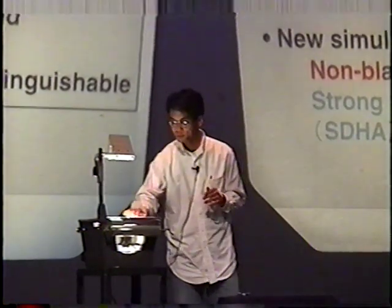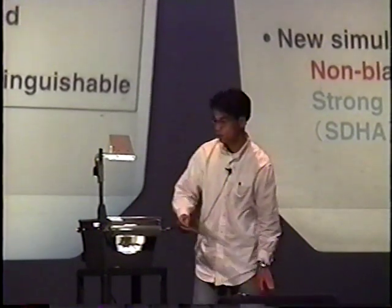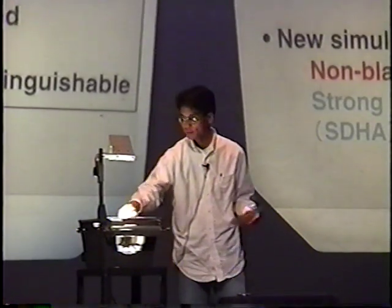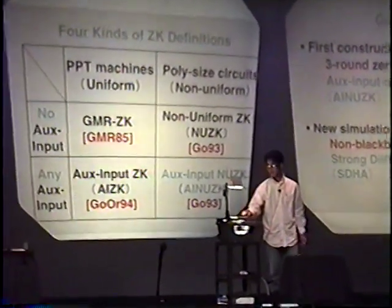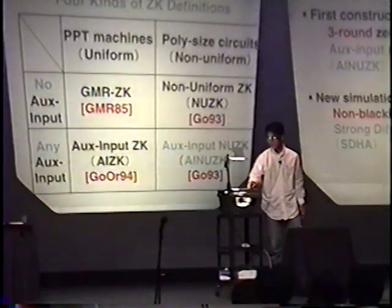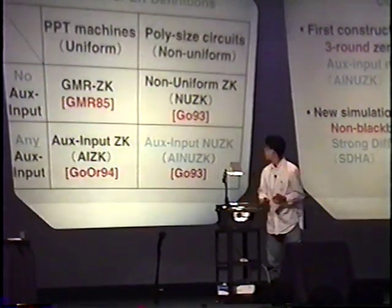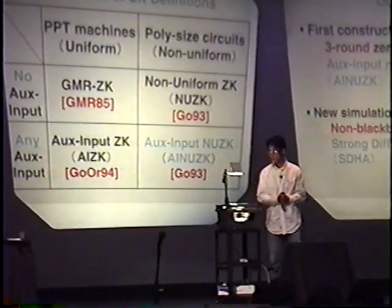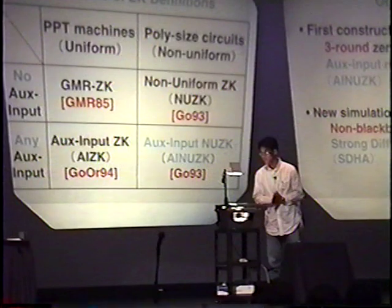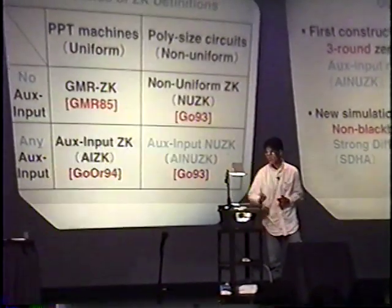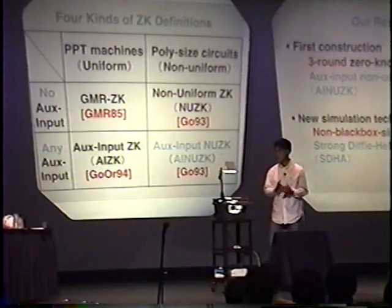And we consider two dimensions in this formalization. One dimension is about auxiliary input to the Verifier. In some definitions, the Verifiers are allowed to take any auxiliary input. And in other definitions, they are not. The other dimension is about the computational model of the Verifier and the simulator. In the uniform model, they are modeled by probabilistic polynomial time machines.